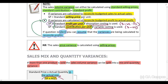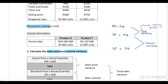Because absorption costing is used, the standard price in the volume variance calculation is going to be the standard profit per unit. You calculate it by taking the selling price per unit, deducting the variable cost per unit, and also deducting fixed costs. So the SP in the volume variance is the standard profit per unit.